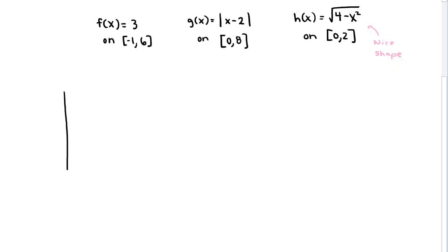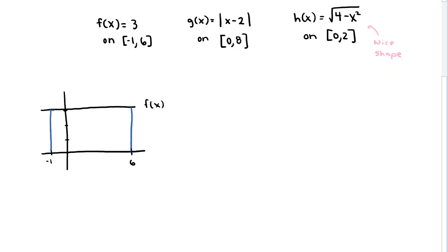So for this first function, this is a constant function. If I make a set of axes and I look at a y-value of 3, that's constant regardless of the value of x. Here x goes from negative 1 to positive 6. The area under this curve between the curve and the x-axis on this interval is just a rectangle — with a height of 3 and a width of 7 units. So the area is equal to 3 times 7, or 21 square units.